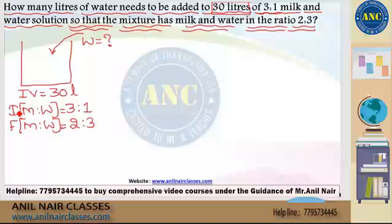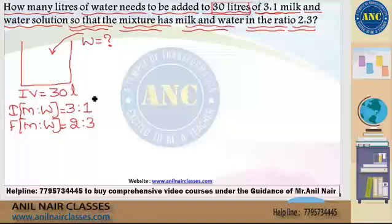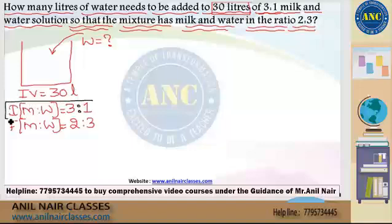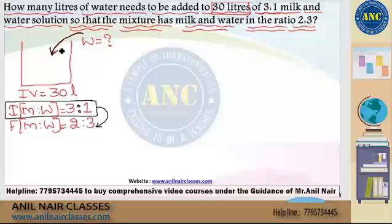To re-explain: initially 30 liters of mixture — a combination of both milk and water — is present inside the vessel. The initial ratio of milk and water is 3:1, but I want it to finally become 2:3. To convert from 3:1 to 2:3 ratio, I need to add some water. How much water needs to be added to achieve this for an initial volume of 30 liters?